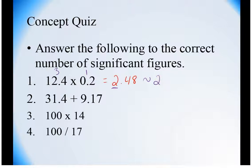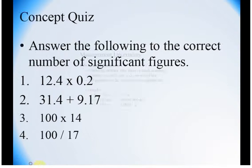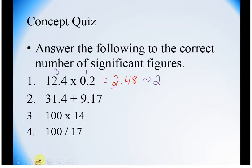31.4 plus 9.17. You end up getting 40.57. This space doesn't have a spot here, and so we should be able to round that to this one space. The 7 makes it come up, so you get 40.6.